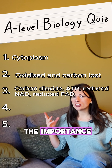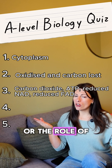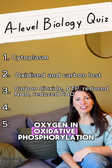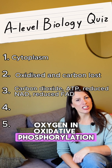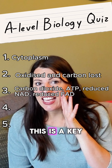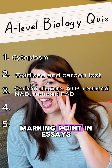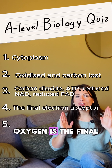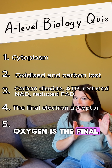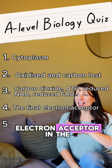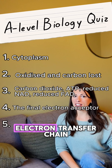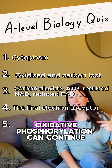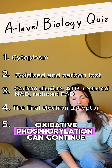Question four: what is the importance or the role of oxygen in oxidative phosphorylation? This is a key marking point in essays. The answer is oxygen is the final electron acceptor in the electron transfer chain, so that means oxidative phosphorylation can continue to happen to make more ATP.